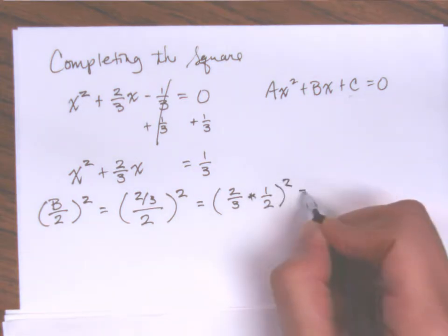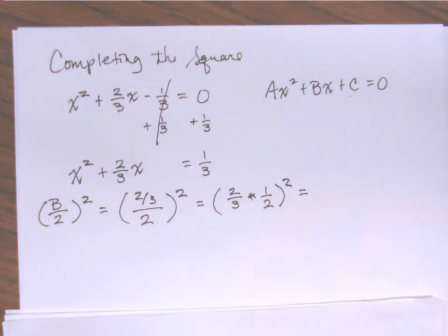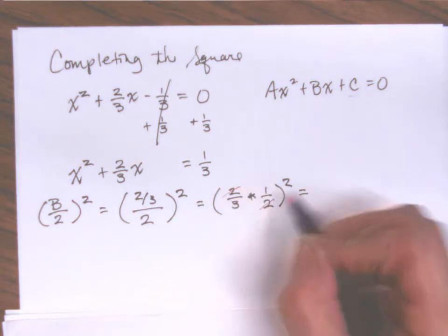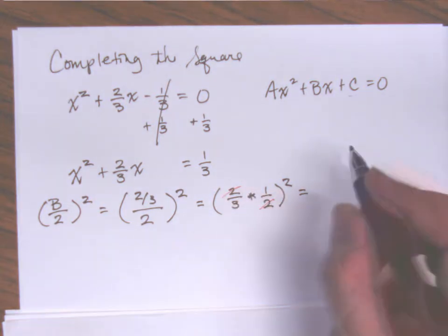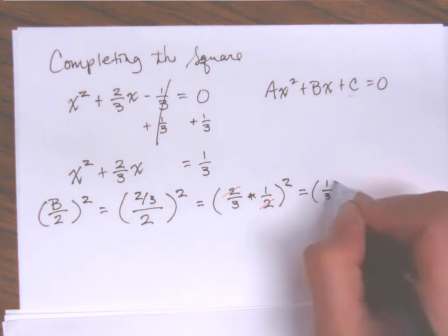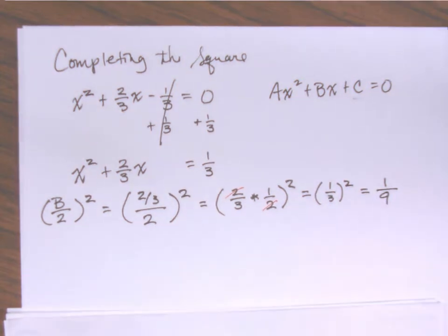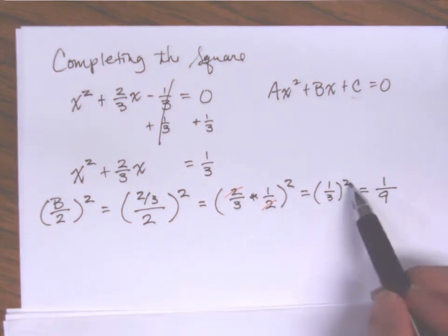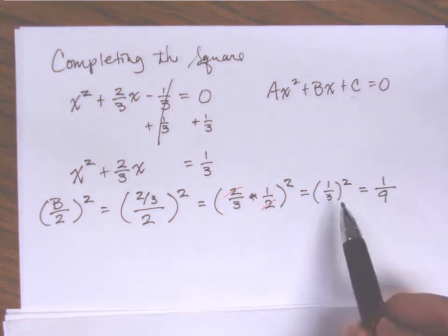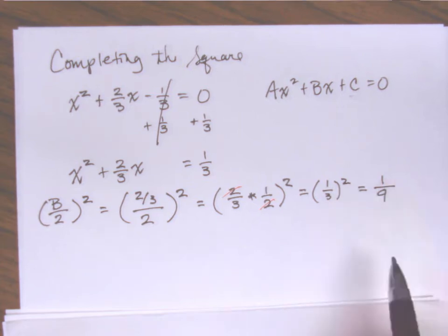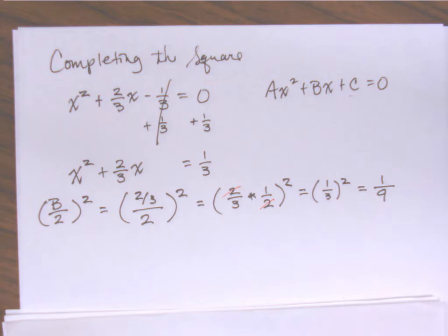Looking at it this way, my twos cancel each other out, so I'm really looking at one-third squared, and that is one over nine. Remember, this square applies to both the numerator and denominator: one squared is one, three squared gives me nine. So you have to square both the numerator and the denominator.